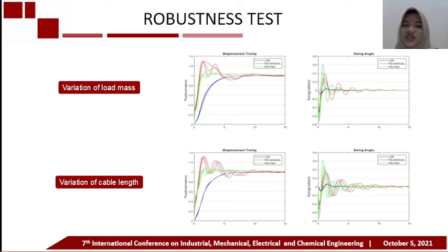From the figures which show the response of the system, it can be seen that the LQR has the smallest change in performance value from the initial parameter for the overshoot, settling time, rise time, error, max amplitude, and value of settling time in the anti-swing performance. And the PID-Manual and PID-PSO control system have their respective advantages for each performance value.